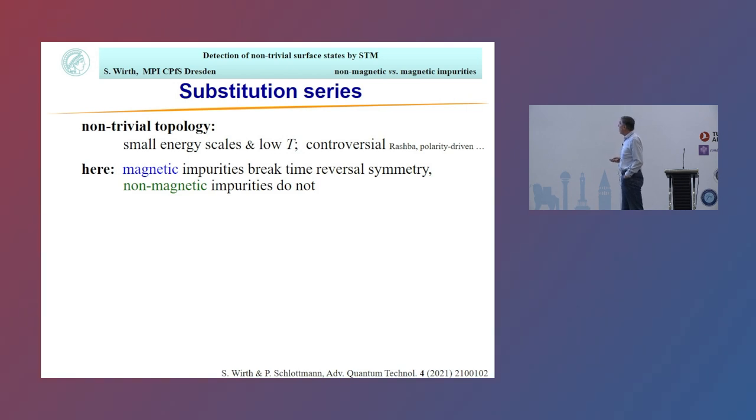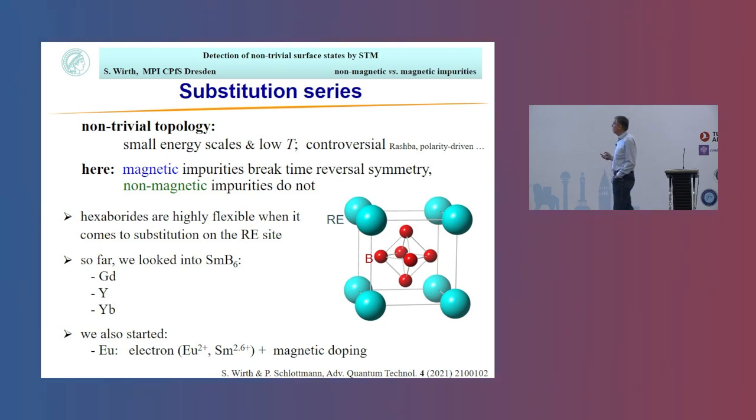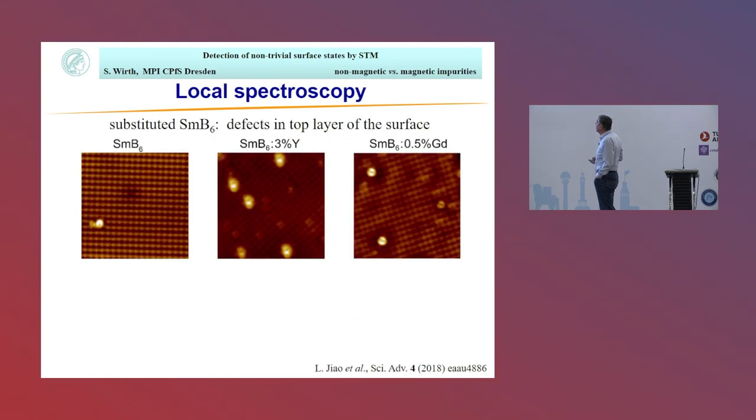So what we thought of doing is: what about the surface? We're very surface-sensitive, so maybe if we talk about topology, we can make use of the time-reversal symmetry breaking in case of magnetic impurities that shouldn't be there compared to non-magnetic impurities. The hexaboride structure is very flexible and helpful in that we can put almost any rare earth and other elements on this site. We set out looking at pure samarium hexaboride, gadolinium-doped ones, and yttrium-doped ones.